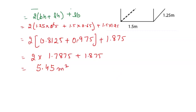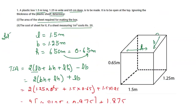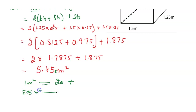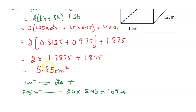Now we find the cost. The cost of 1 square meter is rupees 20. So 1 m² = 20 rupees, therefore 5.45 m² = 20 × 5.45 = 109 rupees. So 109 rupees is the cost to cover this box.